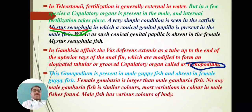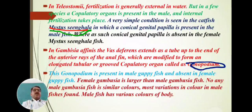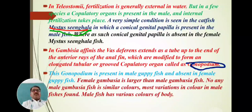In Gambusia affinis, the anal fin rays are modified to form a tubular grooved long structure called the gonopodium. This gonopodium is used at the time of copulation and mating; with its help, the male transfers sperm inside the female's body. This gonopodium is present in male guppy fish and absent in the female guppy fish.